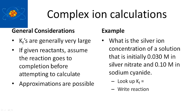That means set up an ICE table, do a limiting reactant, take the final concentrations, plug them into the same equilibrium, and then calculate how much ion is left using the KF and the KF expression.